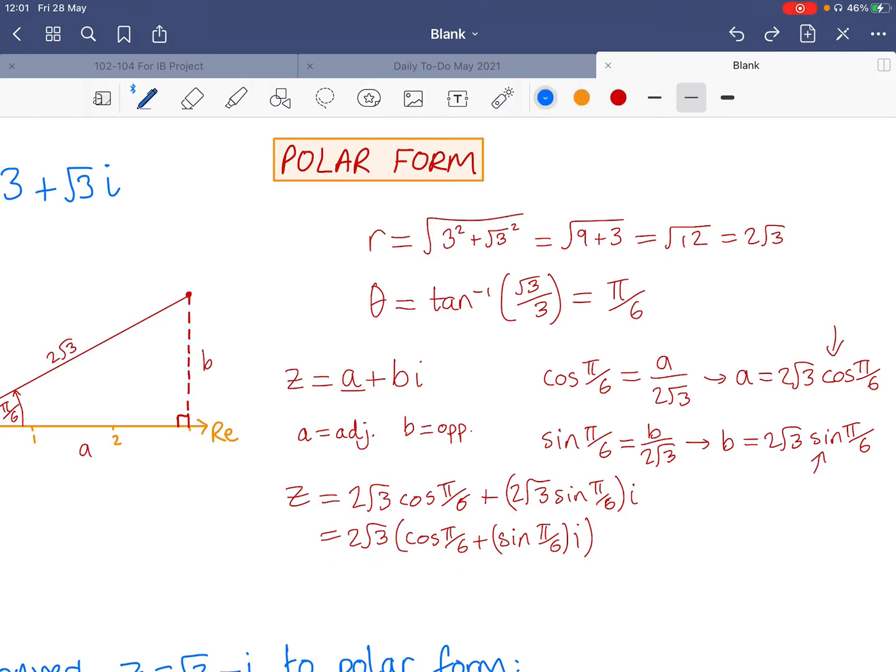Therefore, I can say that I can go from any Cartesian form complex number. If I know the r and theta values, these calculations that we did there will always apply. So I can say that this is always going to be r times cosine theta plus i sine theta.